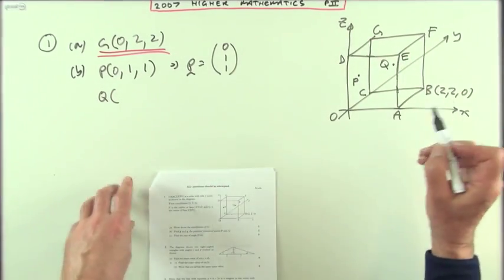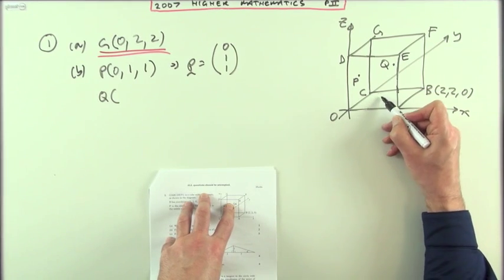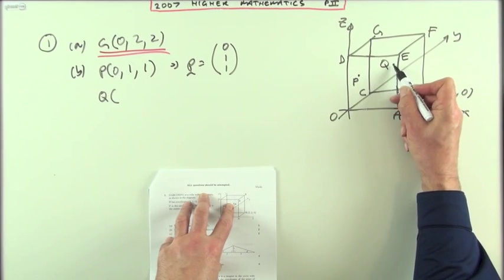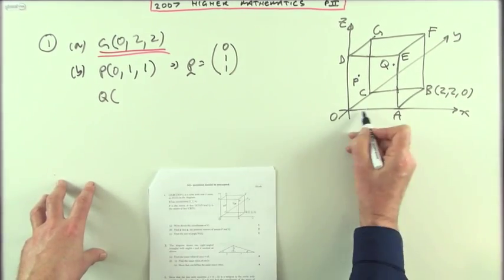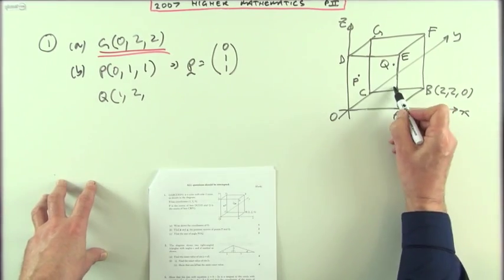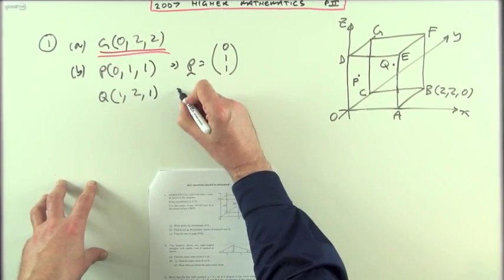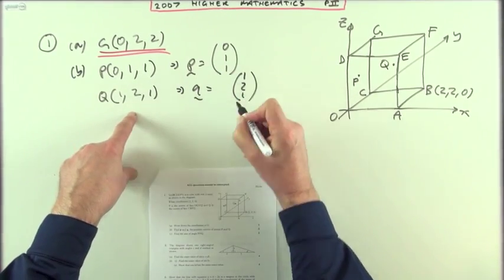Similarly for Q. Q is at the center of the rear face. This time I'll have to go halfway along the x direction, then all the way back, and then halfway up the back face. So it's halfway along in the x direction, one right across the floor for two, and then halfway up the back wall for one, giving its position vector as (1, 2, 1).